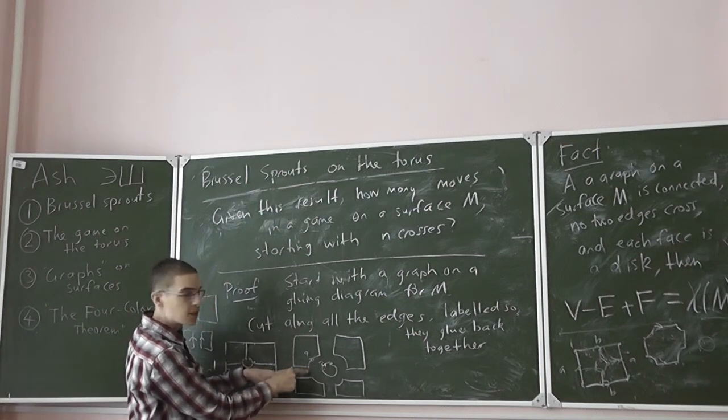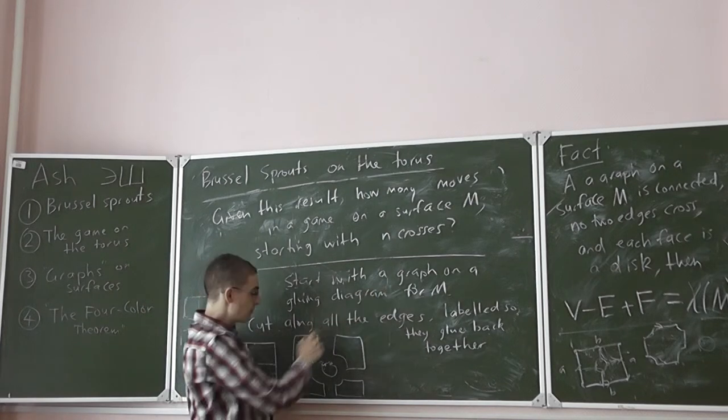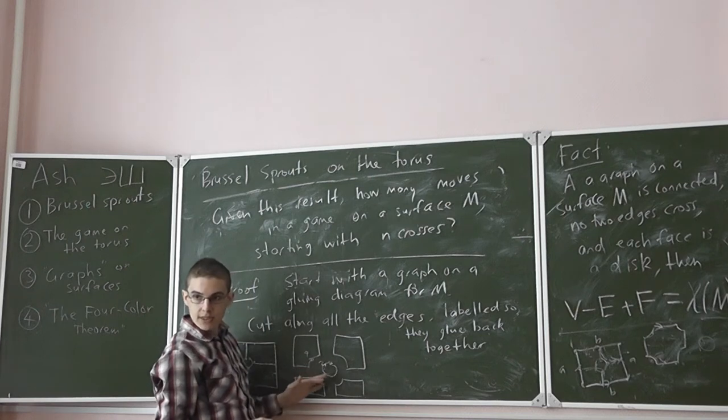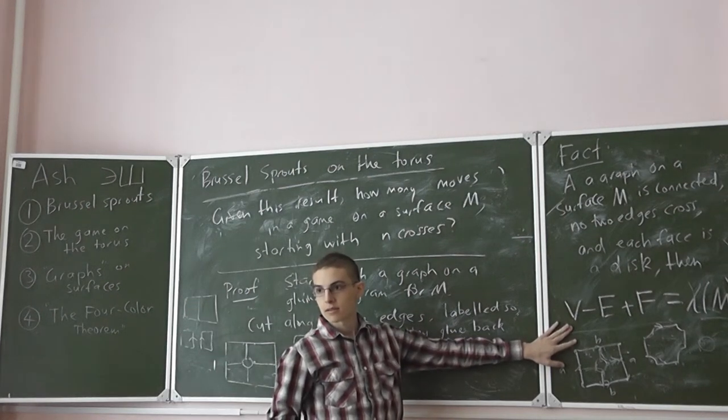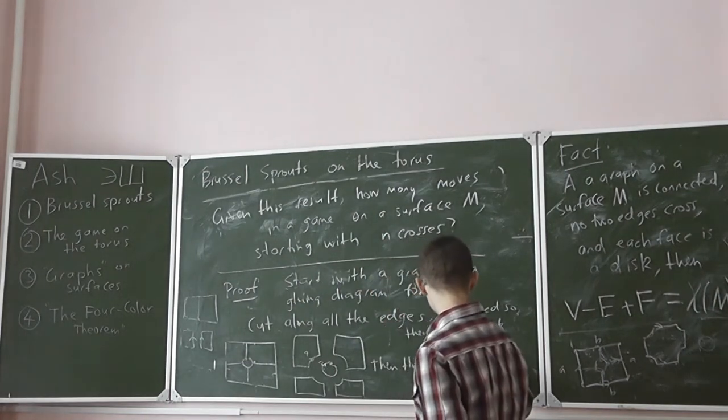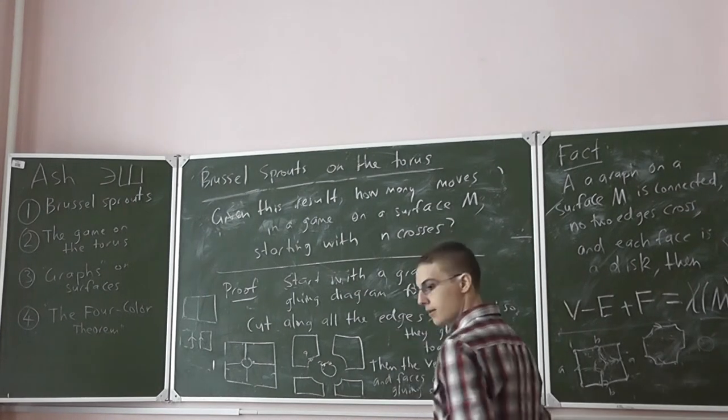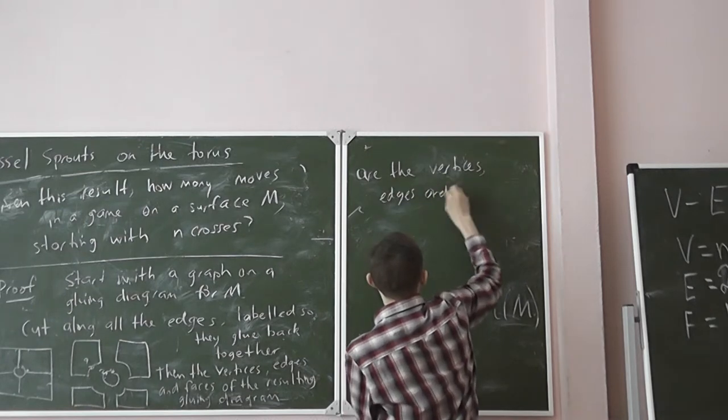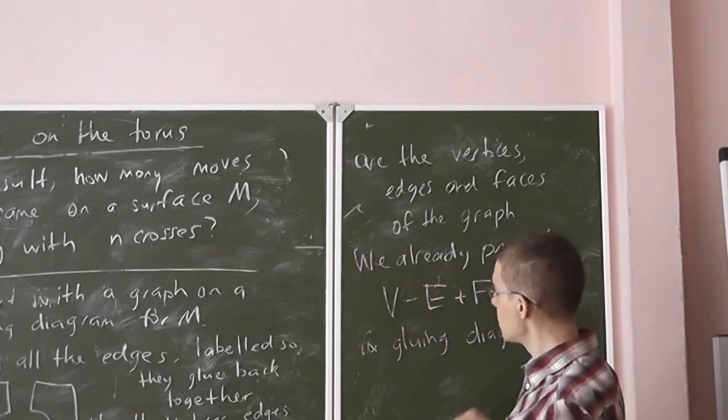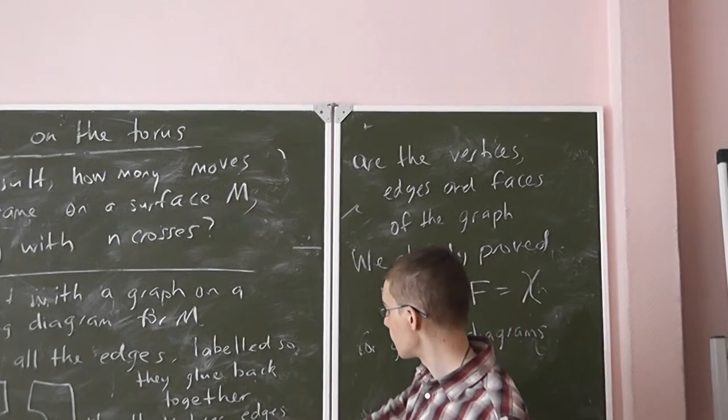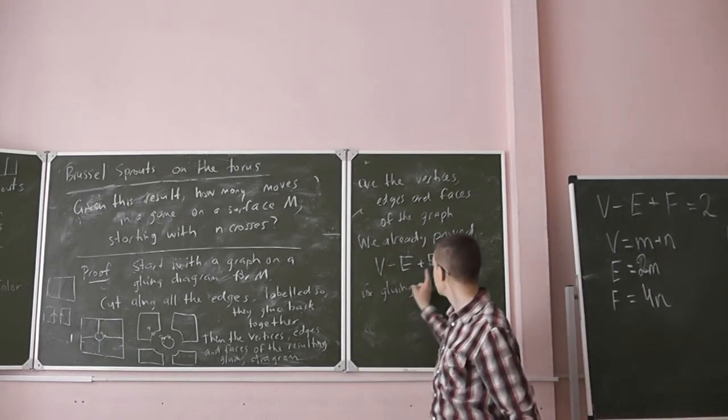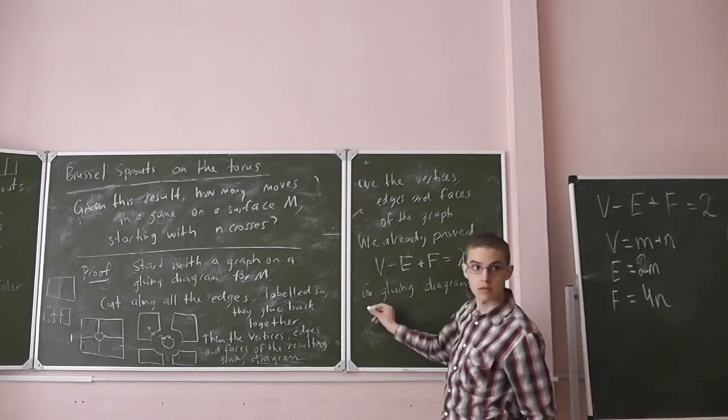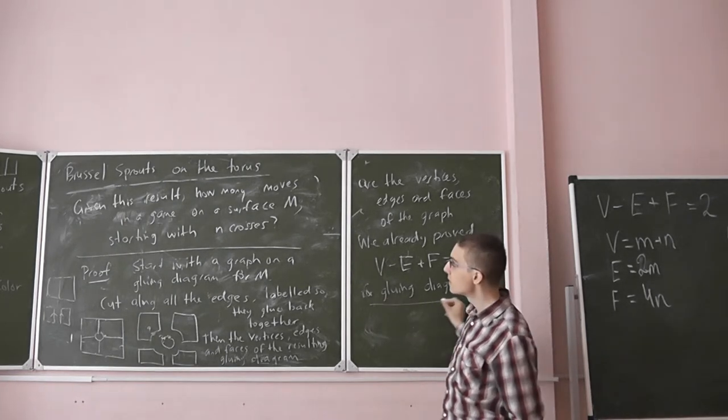So that the edges of the gluing diagram are precisely the edges of your graph, and the vertices of your gluing diagram are precisely the vertices of the graph. And we already proved that for such a gluing diagram this formula applies. V minus E plus F. Where the vertices are the vertices of this gluing diagram, edges of this gluing diagram, faces of this gluing diagram, which have to match with the ones on the graph. Is that okay, Nicola? Yes. Excellent.